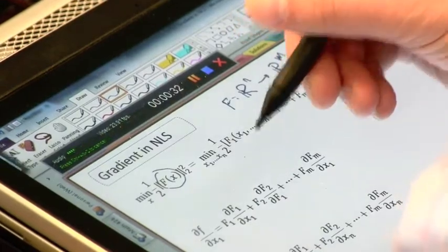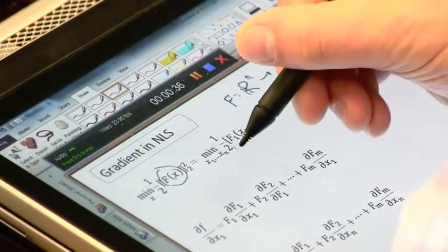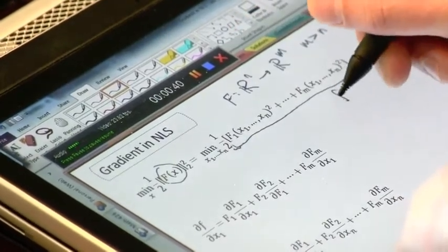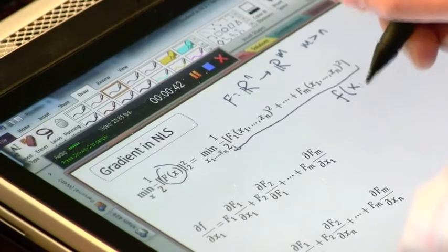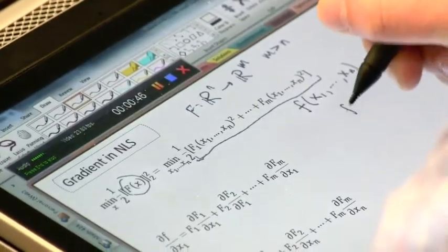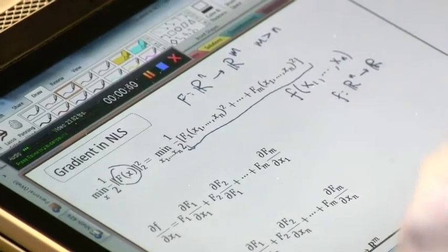So we write that out. It's the inner product of f with itself. And then this quantity here including the one-half is what we call little f, right? It's a function of all the variables and then it's a scalar result. So it maps n variables to a single result.